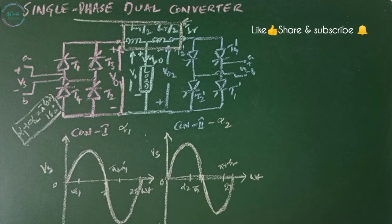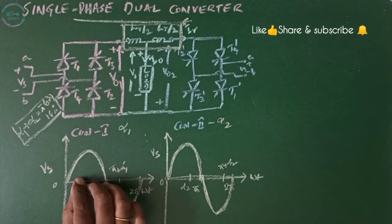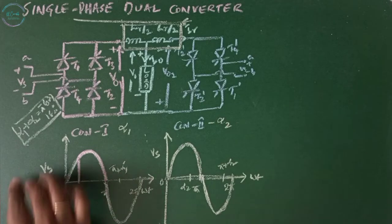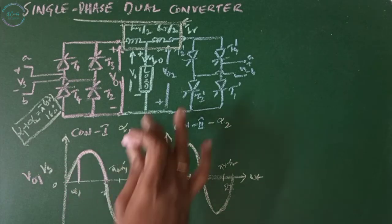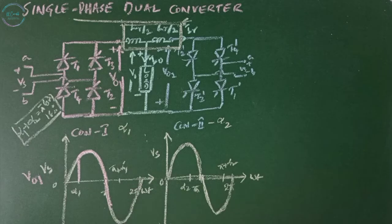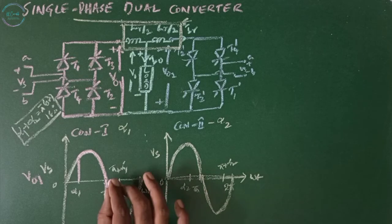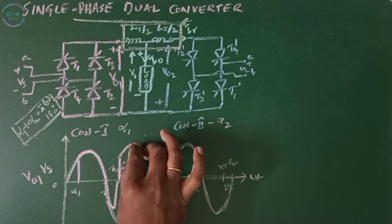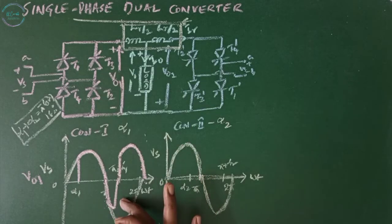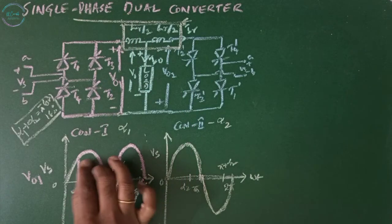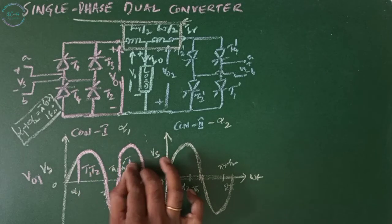For converter one operation: when the input signal Vs is given between terminals A and B, in the first positive half cycle thyristors T1 and T2 are turned on at angle alpha one. The input voltage Vs then appears across the output as V0 one. Due to the inductor in the load, it continues to follow the input even into the negative half cycle. Then in the negative half cycle at omega t equals pi plus alpha one, thyristors T3 and T4 are turned on, and the voltage appears across the output in positive direction. The negative voltage appears across the load with current flowing from top to bottom — T1 and T2 conduct in one half cycle, T3 and T4 in the other.